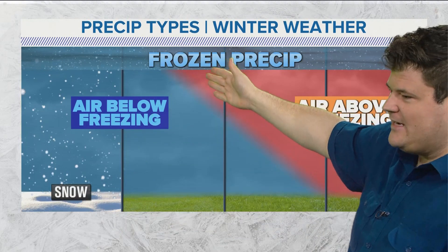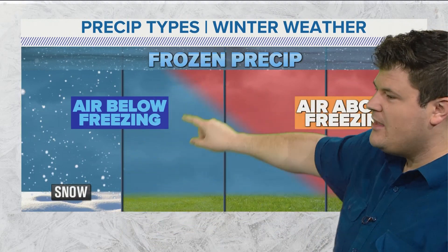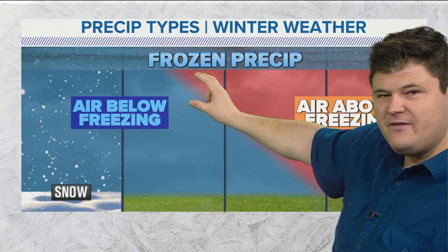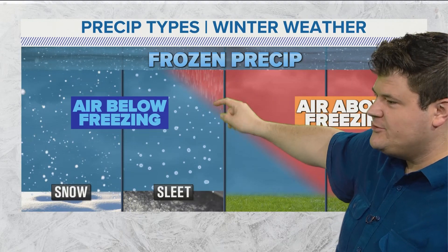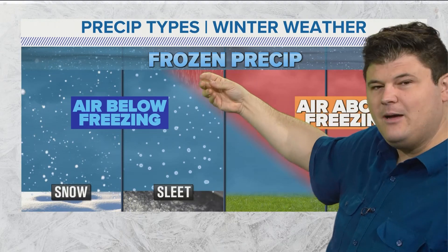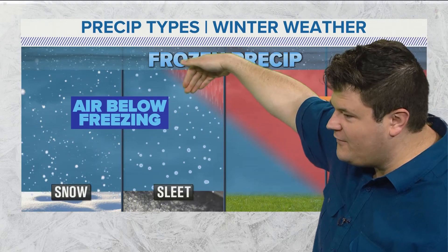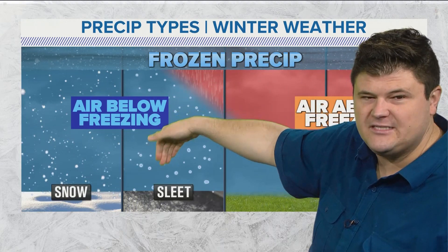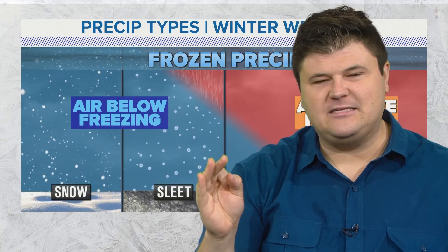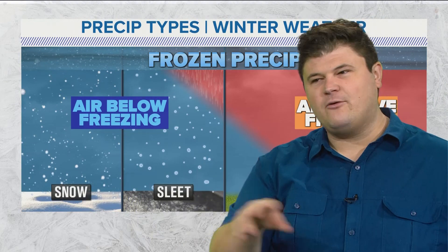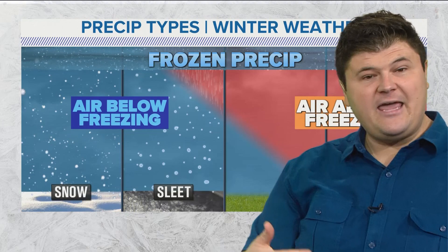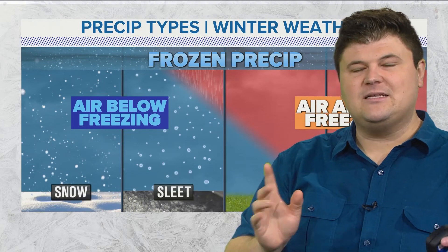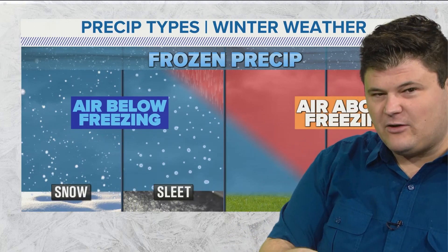Now let's look at this profile of the atmosphere. You have a little wedge of air that's above freezing. That snow will fall through that wedge, it will melt and become liquid. As that liquid starts to fall back through air that's below freezing, it will form into little balls of ice — these little pellets that we call sleet. They kind of ping around and bounce when they hit the ground.